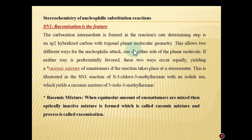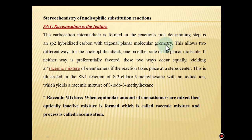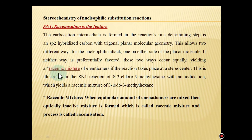Now, regarding stereochemistry — racemization is an important feature of the SN1 reaction. The carbocation intermediate formed in the rate determining step is an sp2 hybridized carbon with trigonal planar geometry. This allows two different ways for the nucleophile to attack, one on either side of the molecule. If neither way is preferred, these two ways occur equally, yielding a racemic mixture of enantiomers.